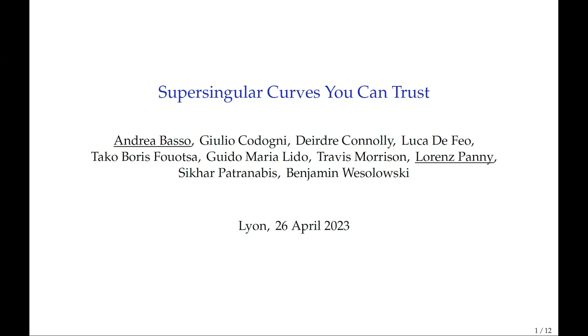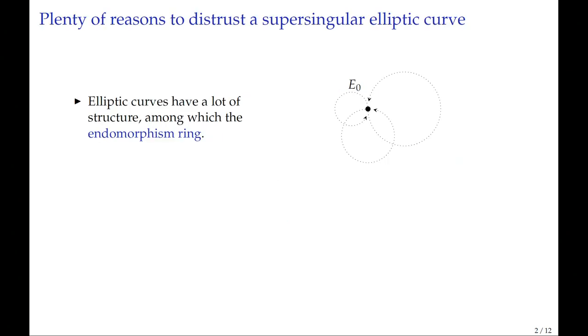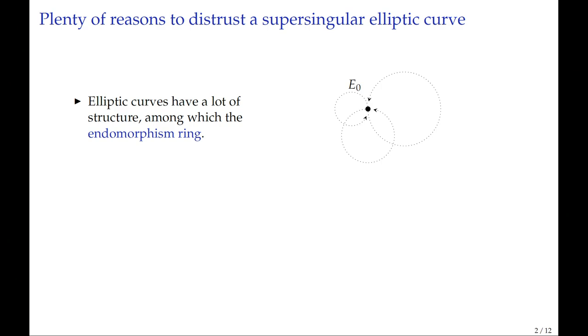In isogeny-based cryptography, we work a lot with super-singular curves. And these super-singular curves have a lot of extra structure beyond being a generic group. One of these pieces of structure is the endomorphism ring. Don't worry about it if you don't know what that is. We're going to keep this fairly high level.